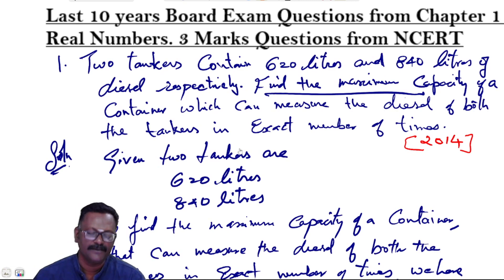To recap the question: Two tankers contain 620 liters and 840 liters of diesel respectively. Find the maximum capacity of the container which can measure the diesel of both the tankers in exact number of times.